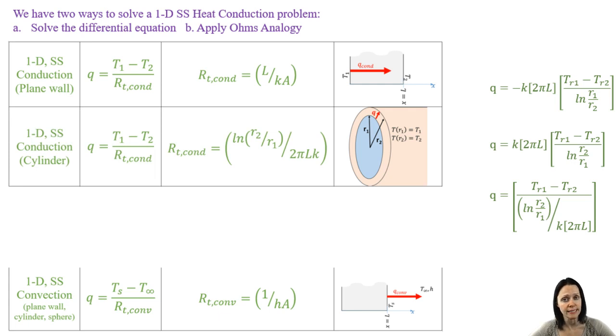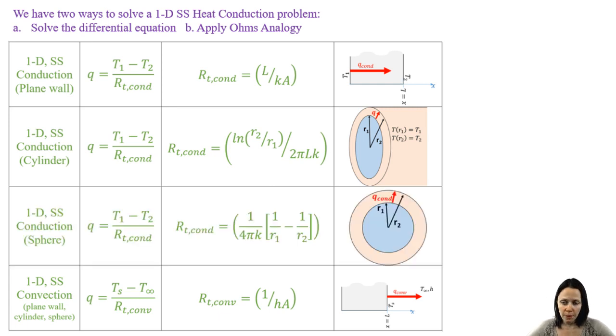And then we could also extend this to spherical coordinates as well, but we'll leave that derivation as an exercise to you if you would like. Remember that Ohm's analogy is only good for 1D steady state conduction, and it's not good for getting the temperature distribution, but it's a very powerful tool for finding the heat transfer rate.